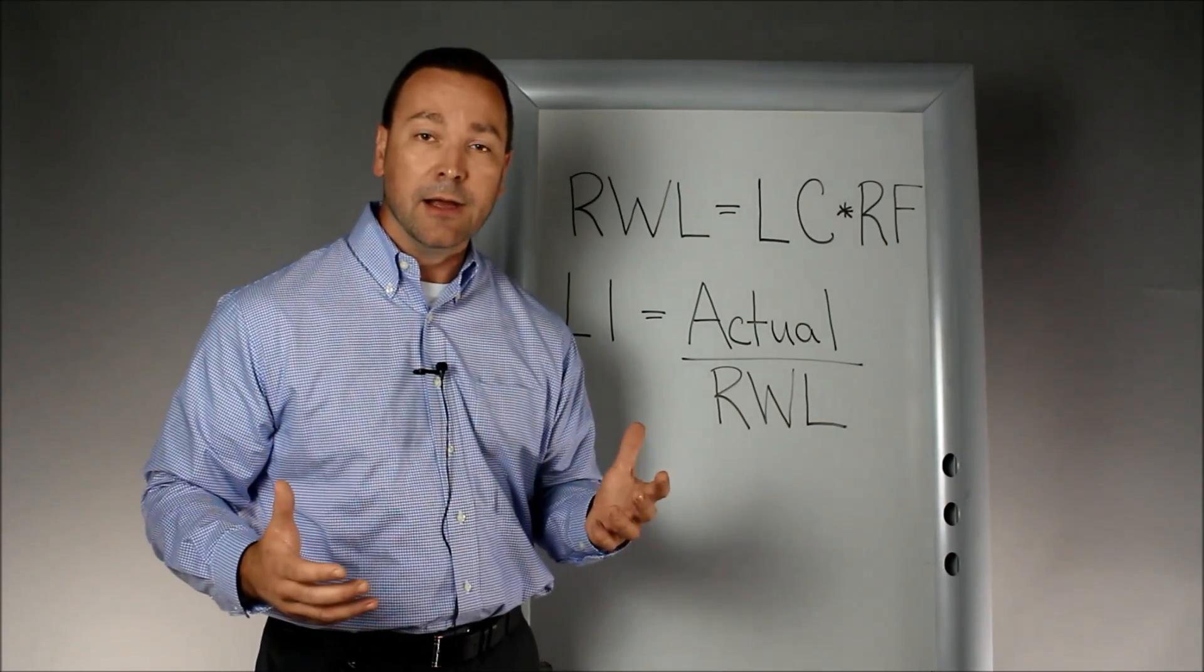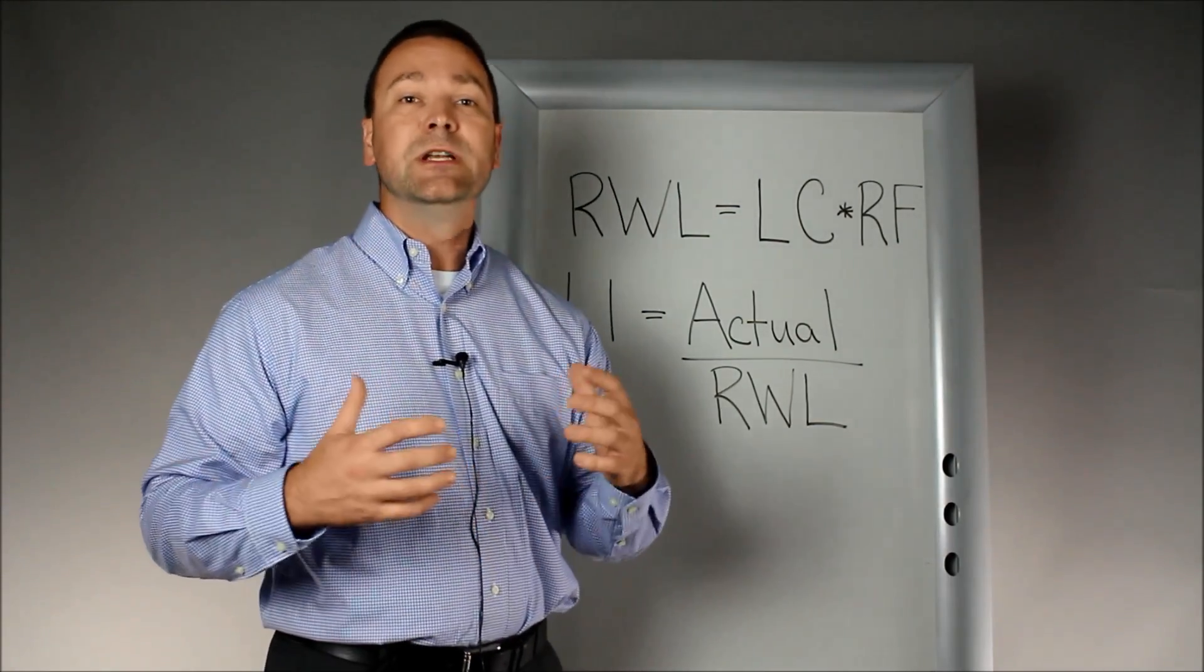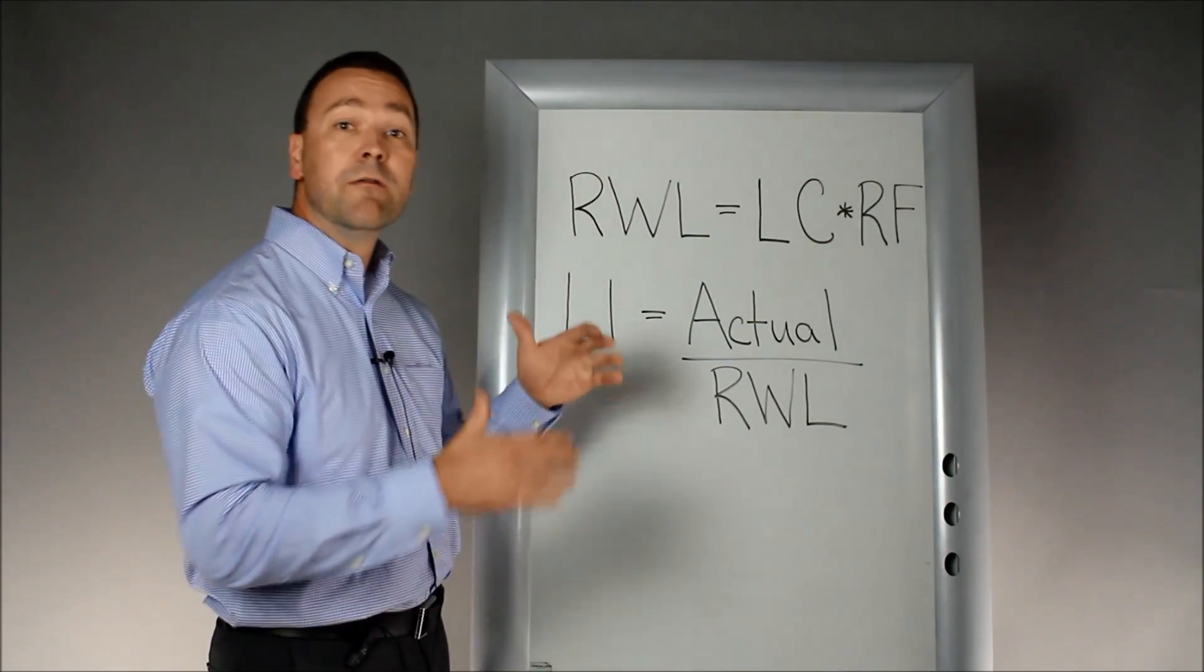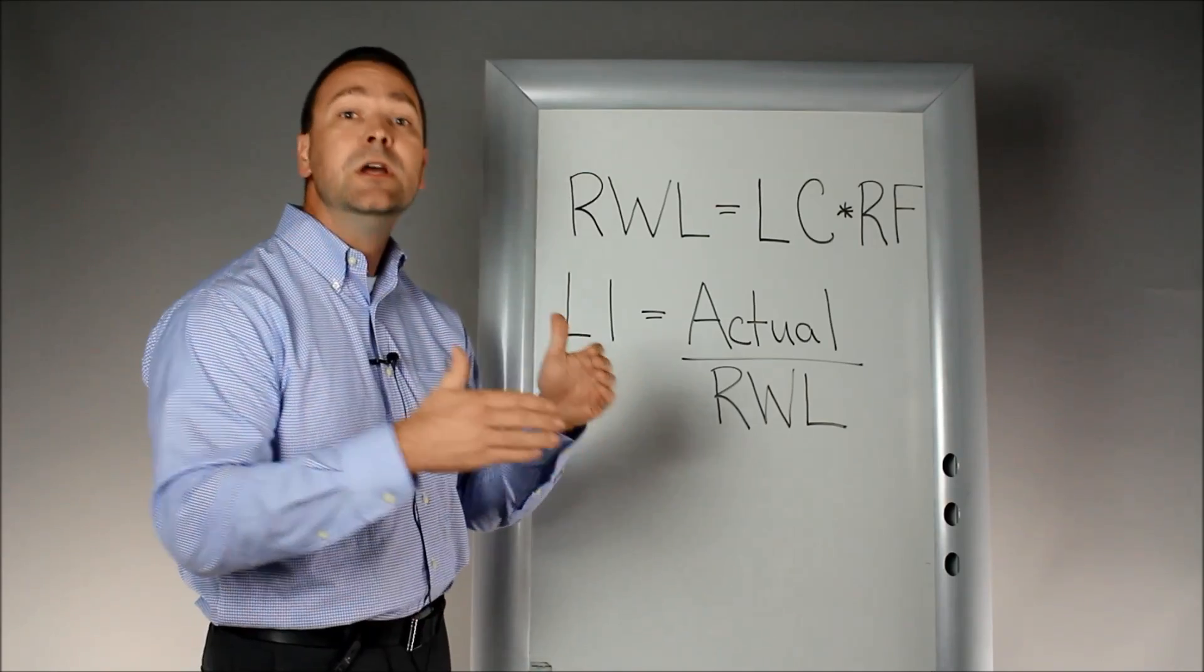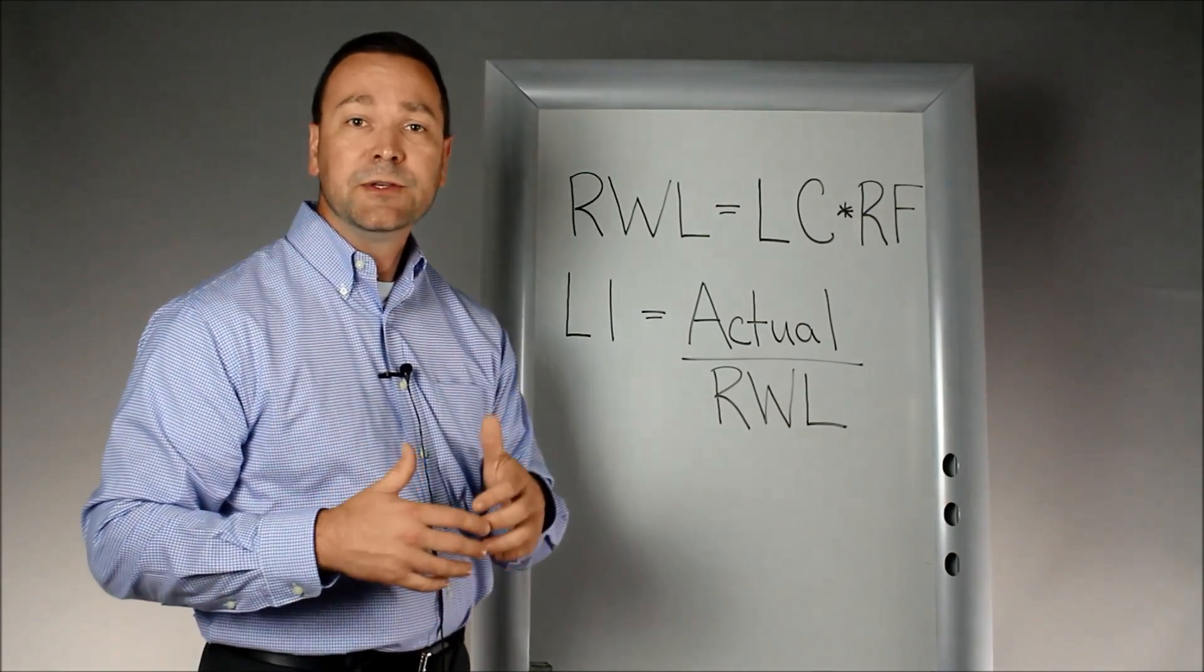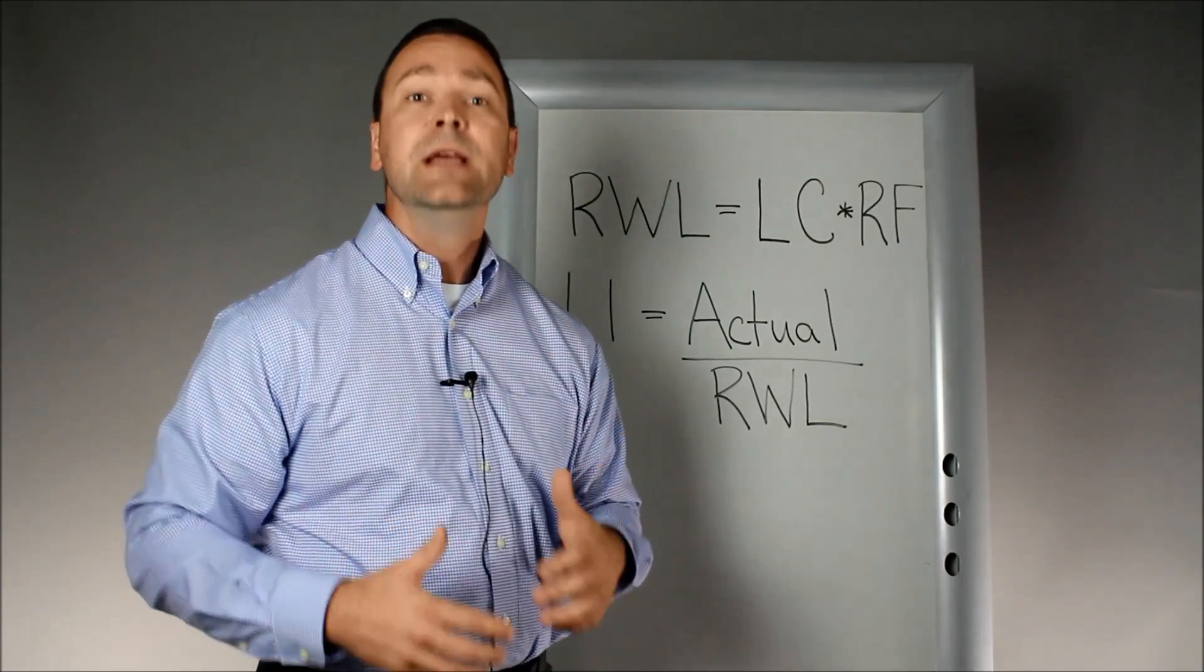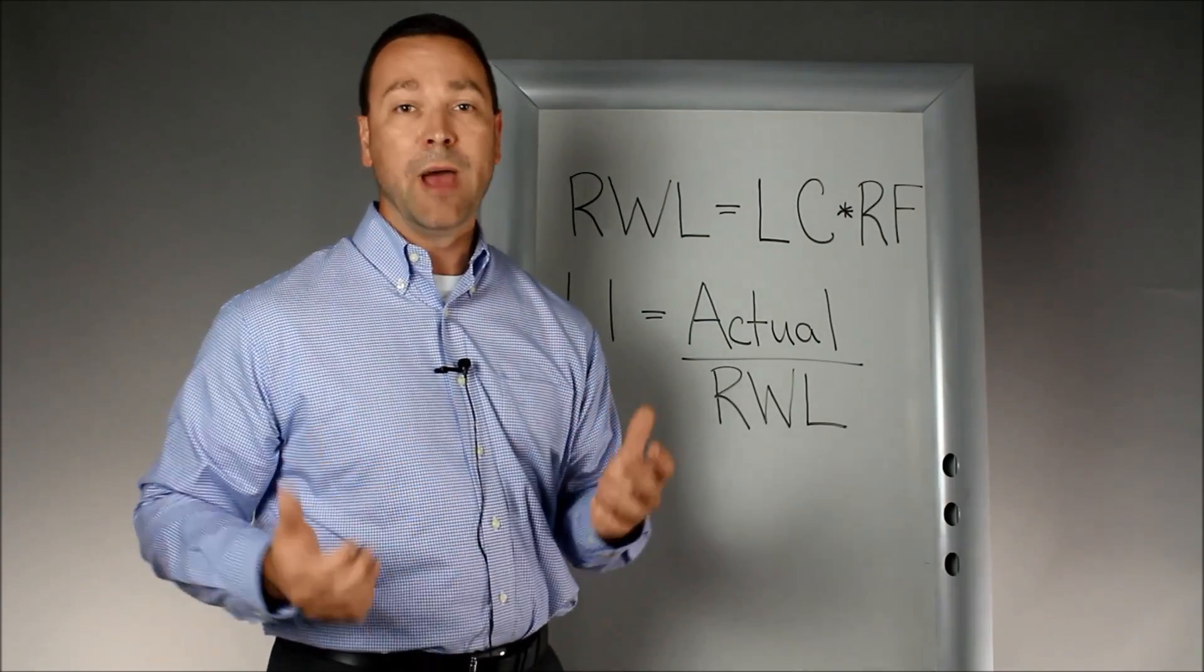So what's the bottom line? The bottom line is we should adjust our level for high risk for the NIOSH lifting equation from a level of 3.0 to 2.0, which tells us at that point we need to implement engineering controls to help us minimize low back pain.